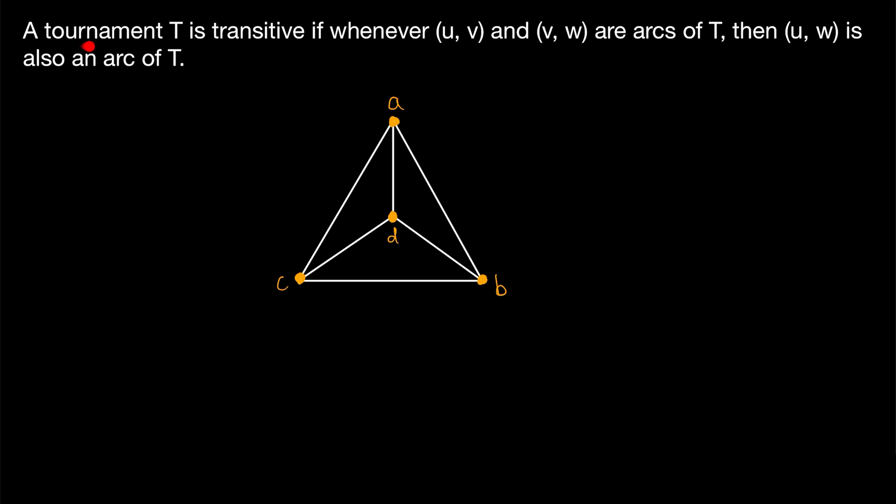Today, we'll go over a special type of tournament called a transitive tournament. You might have some idea what this could be if you're familiar with the word transitive. For example, if x is less than y and y is less than z, then x is less than z by the transitive property of the less than relation.